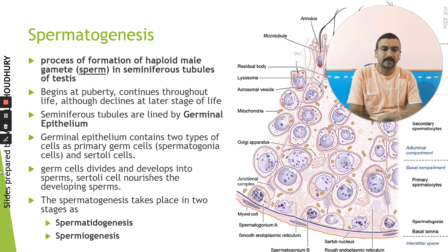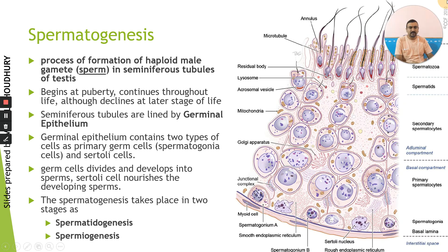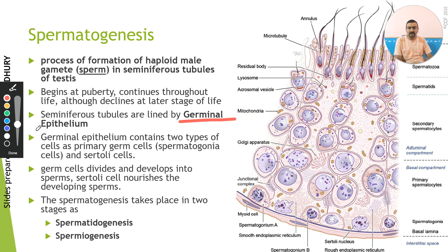Spermatogenesis is the process of sperm formation, which takes place in specialized structures called seminiferous tubules. Recall from the male reproductive structure that inside the testicular lobules there are coiled structures called seminiferous tubules. The lining of the seminiferous tubules contains various cells formed from what we call the germinal epithelium. This germinal epithelium differentiates to give two types of cells: the spermatogonia or sperm mother cells, and the nutritive cells called Sertoli cells.